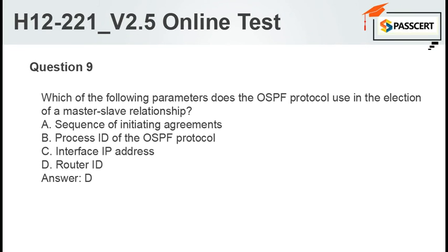Question 9: Which of the following parameters does the OSPF protocol use in the election of a master-slave relationship? A. Sequence of initiating agreements. B. Process ID of the OSPF protocol. C. Interface IP address. D. Router ID. Answer: D.